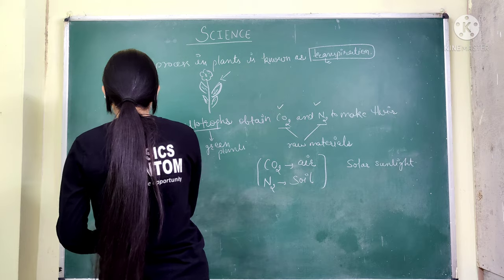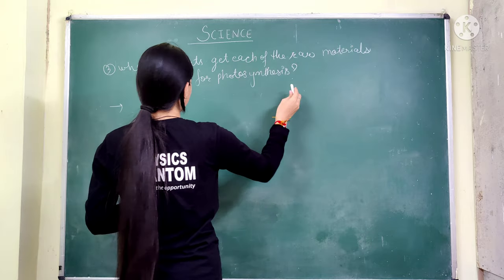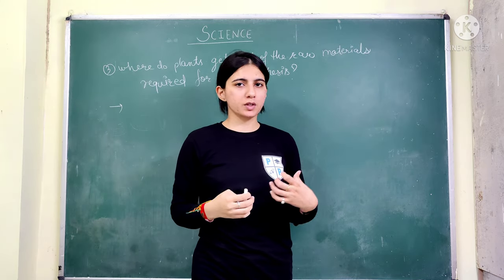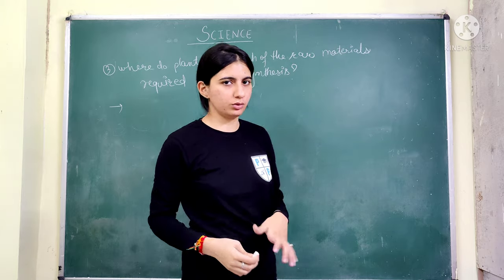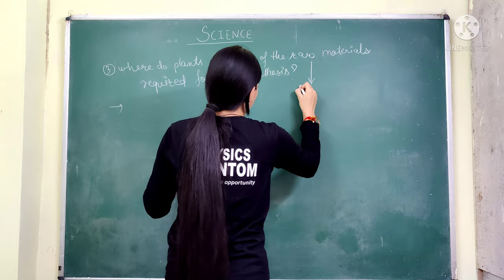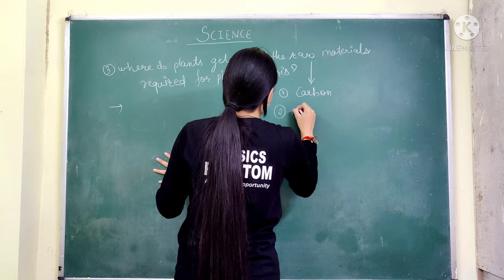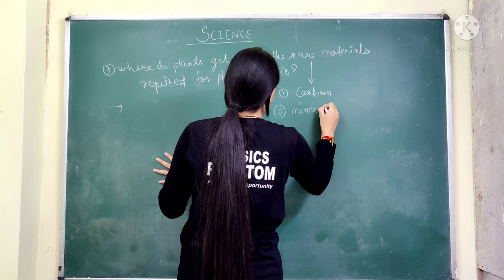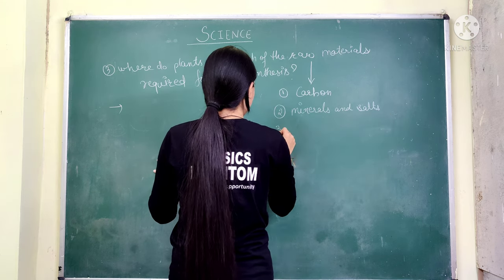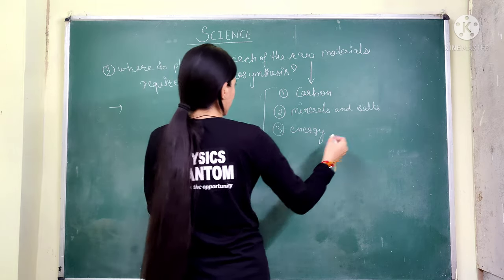Next question: where do plants get each of the raw materials required for photosynthesis? Plants are autotrophs and need raw materials to produce their own food. The raw materials needed are: first, carbon; second, minerals and salt; and third, energy.